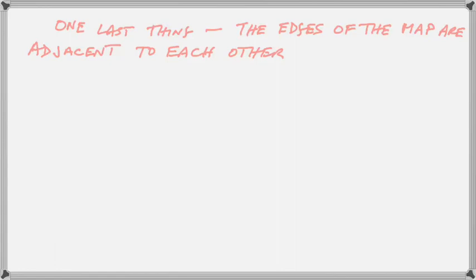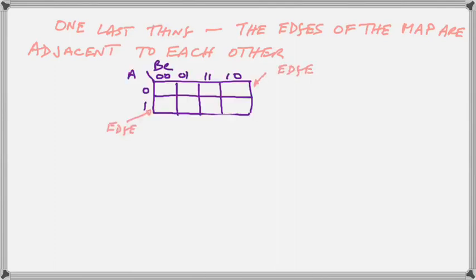One last thing. The edges of the map are also adjacent to each other. There is a definition of the edge. It's as if you wrapped the whole Karnaugh map around a pencil so that the two edges touch each other.